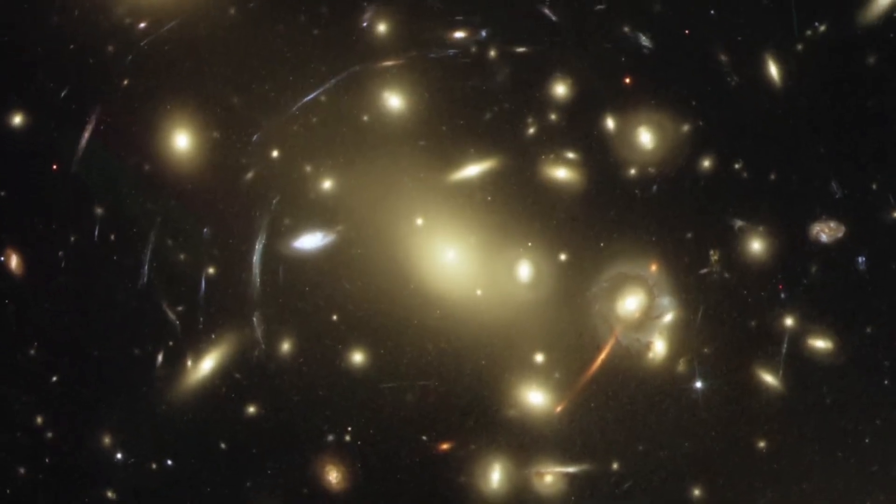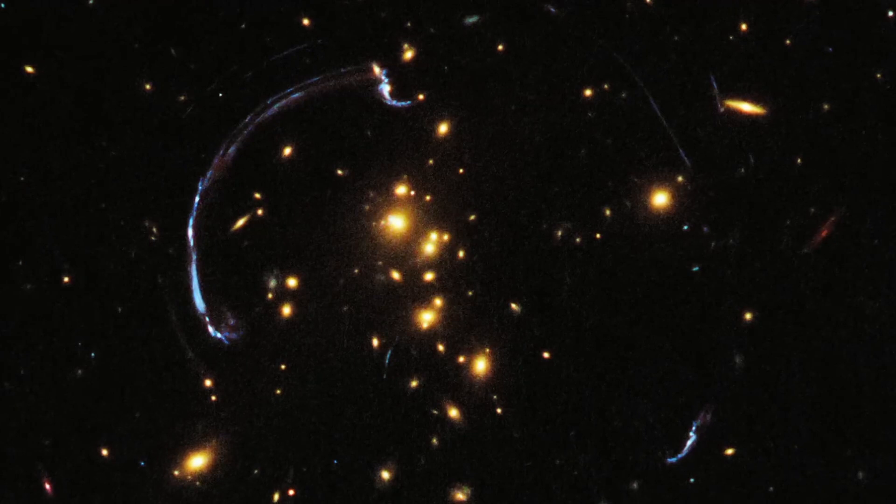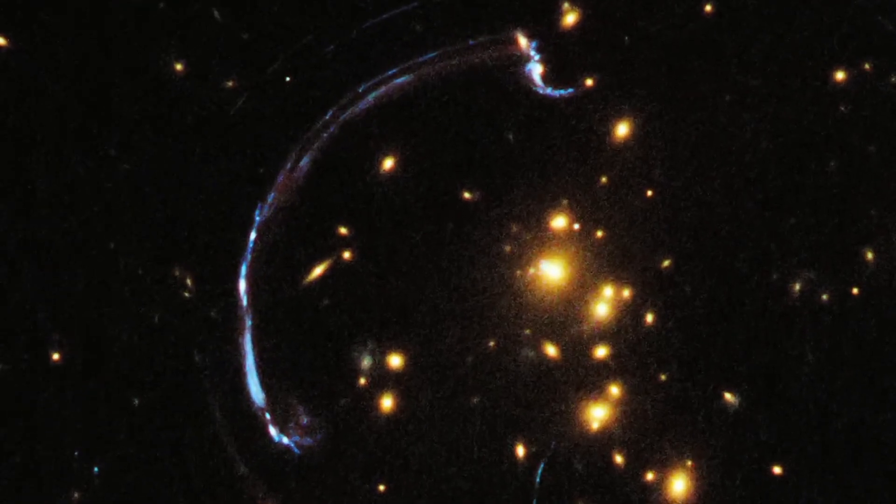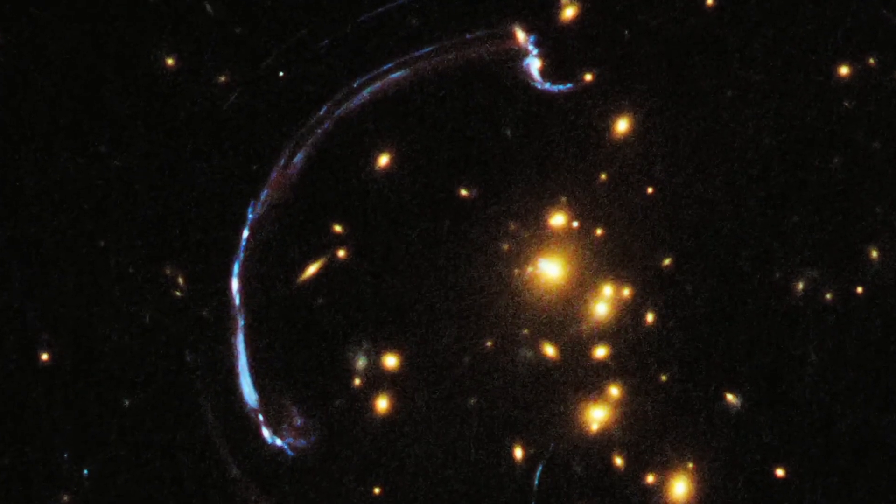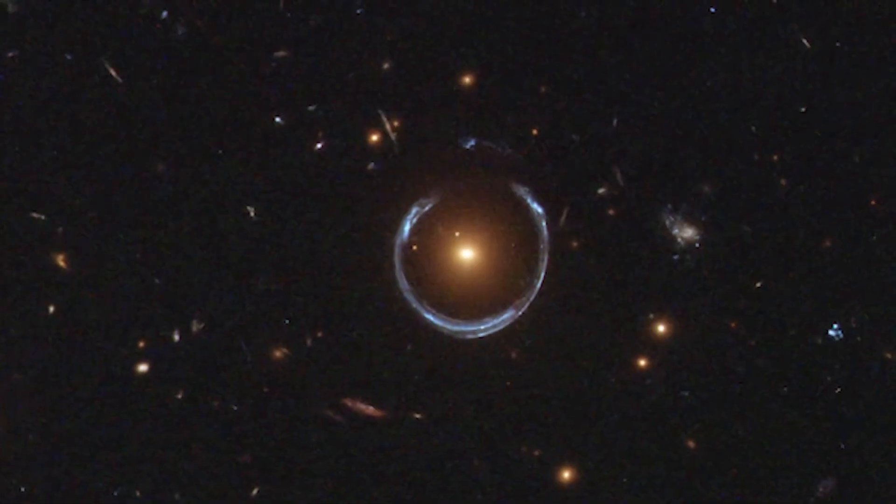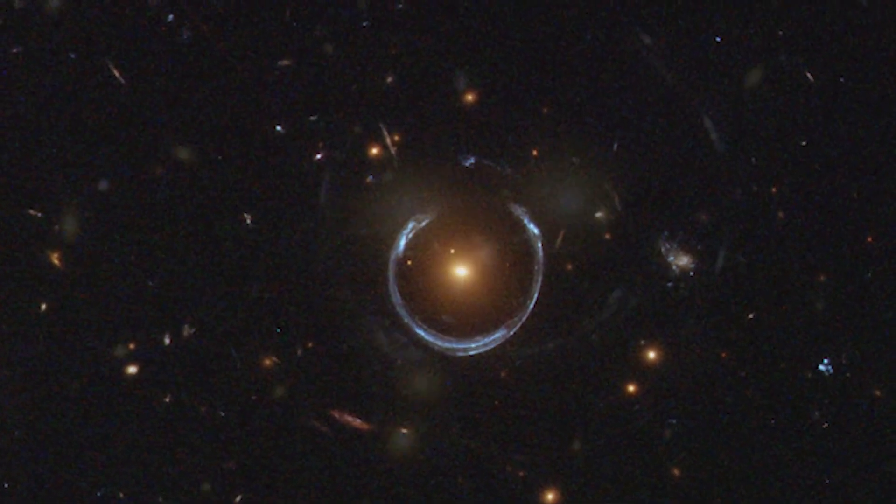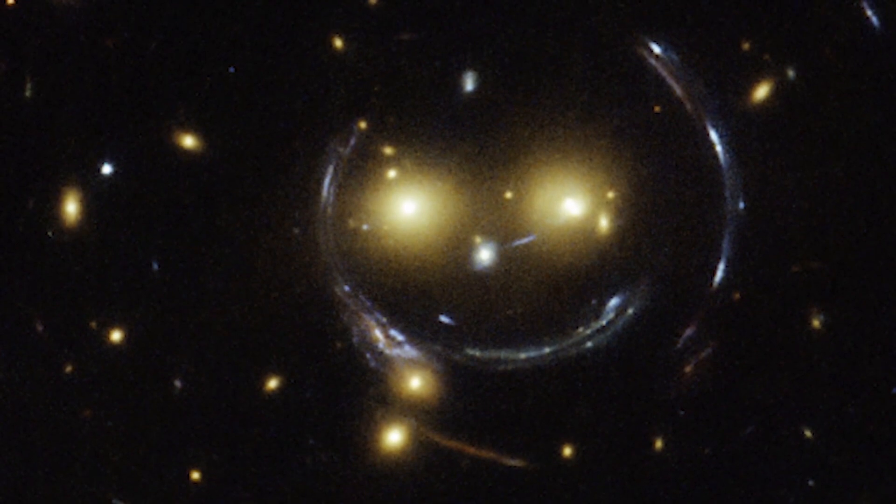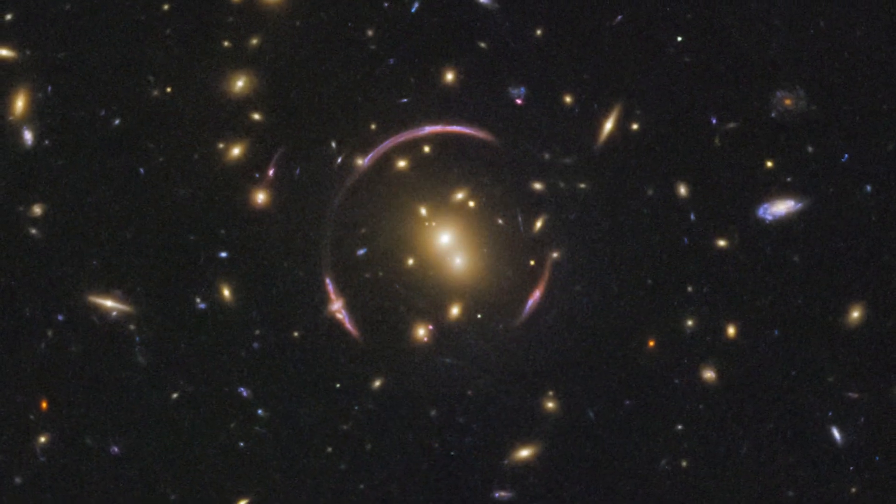In exceptional cases, when these two galaxies are perfectly aligned, the light from the distant galaxy can form a ring around the closer galaxy. This phenomenon is what we know as an Einstein Ring and is one of the most impressive and fascinating phenomena in cosmology.